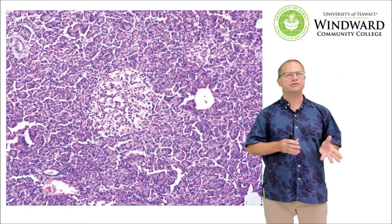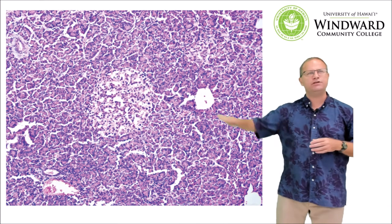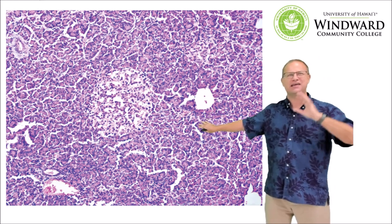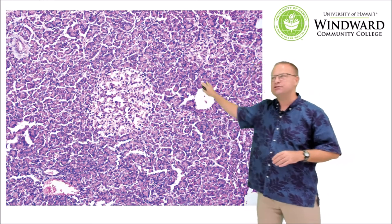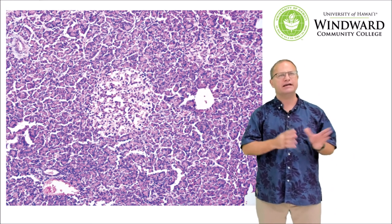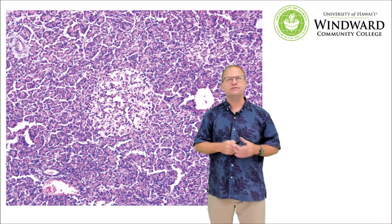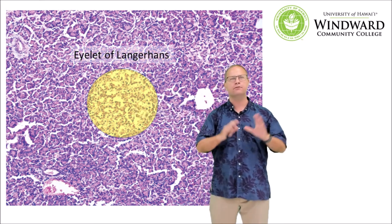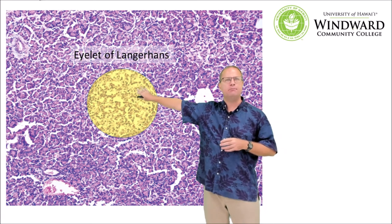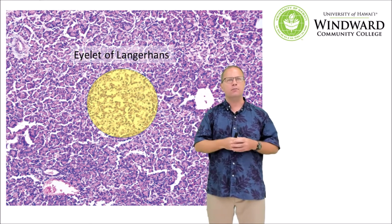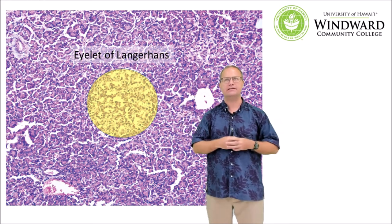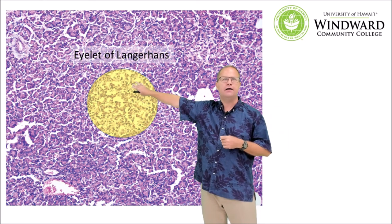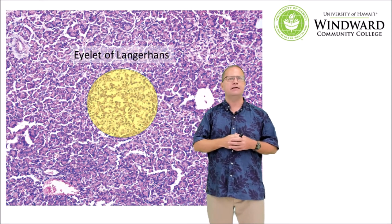Histologically, the majority of tissue in the pancreas is exocrine — this is acinar tissue responsible for making enzymes that we'll learn about in the digestive system chapter. However, you can see a very distinctive structure called the islets of Langerhans. The islets of Langerhans are very important for secreting the hormones insulin and glucagon. They contain both alpha and beta cells which secrete different hormones. Insulin helps to bring blood sugar down from going too high, and glucagon helps to elevate blood sugar. Be sure to identify the islets of Langerhans in any histological sections of the pancreas.